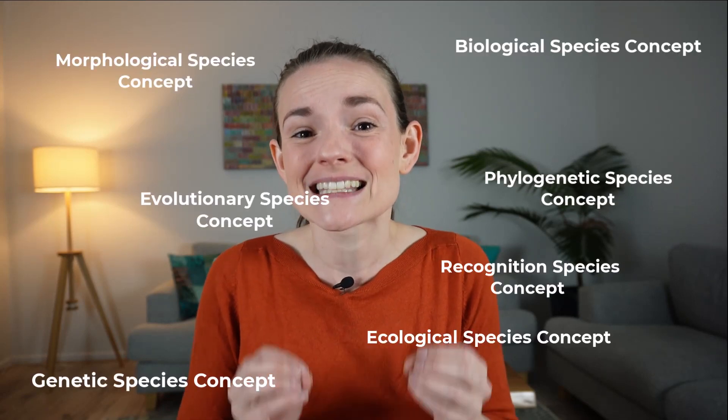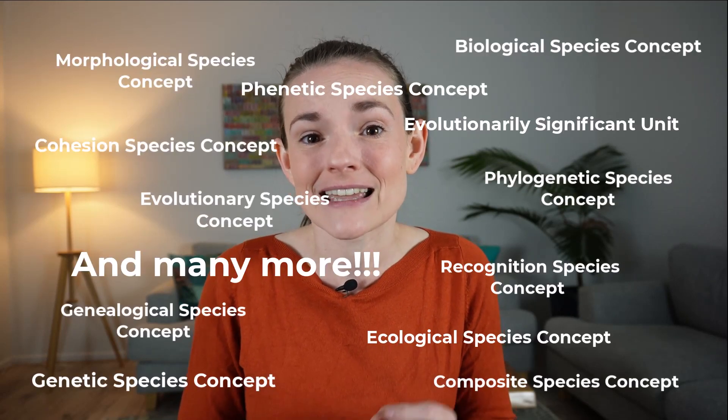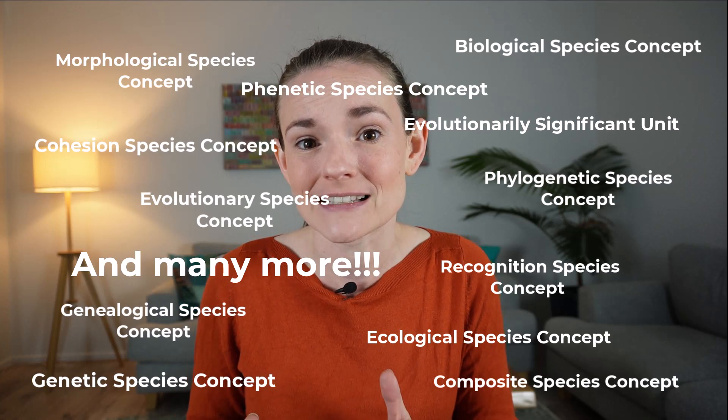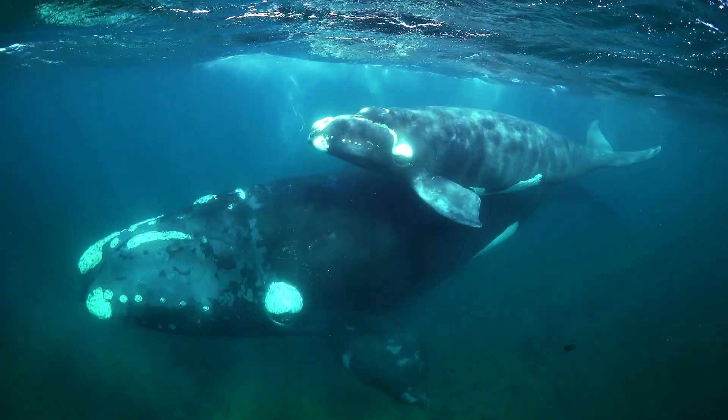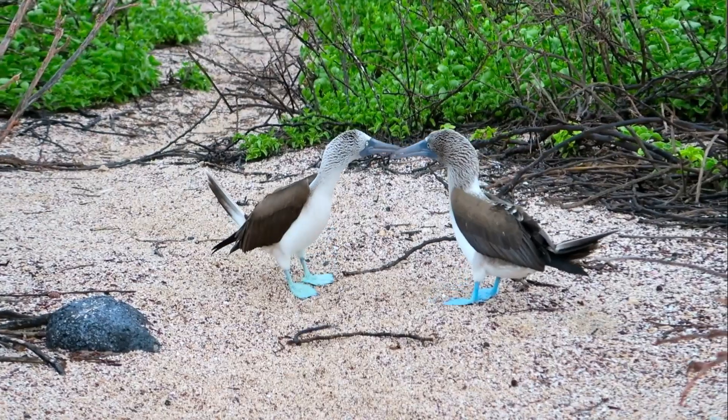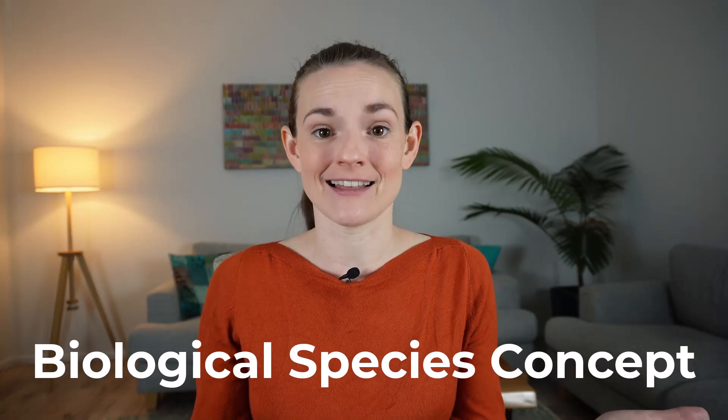In fact, there are at least 26 different ways that scientists can define and identify species, and it doesn't look like we're going to be able to agree on just one anytime soon. The most well-known definition of a species, and the one you probably learned in school, is that a species is a group of individuals that can breed with one another, will give birth to fertile offspring, and cannot breed with other groups. This definition is known as the biological species concept.